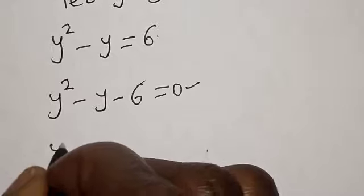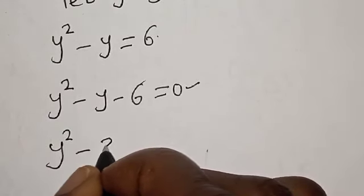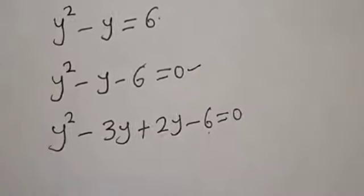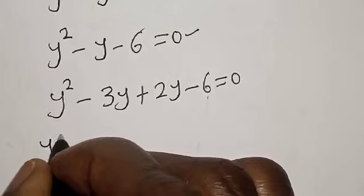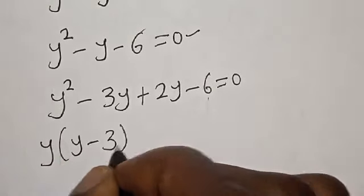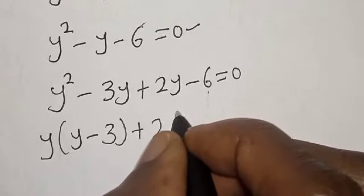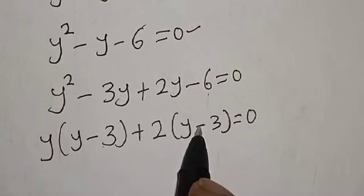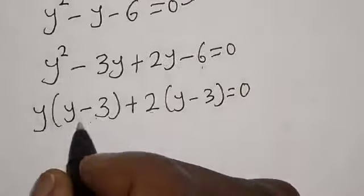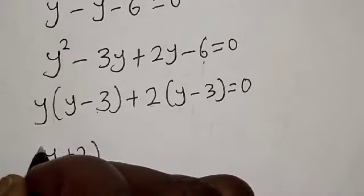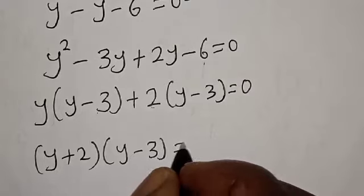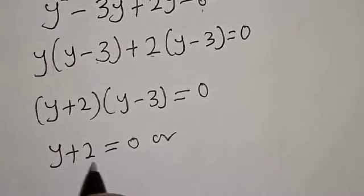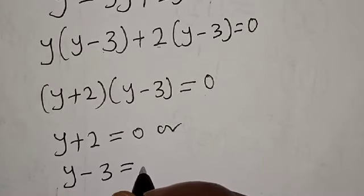We have y squared minus 3y plus 2y minus 6 is equal to 0. Factoring y out, we have y times (y minus 3) plus 2 times (y minus 3) is equal to 0. This gives (y plus 2) times (y minus 3) is equal to 0. There are two cases: y plus 2 is equal to 0, or y minus 3 is equal to 0.